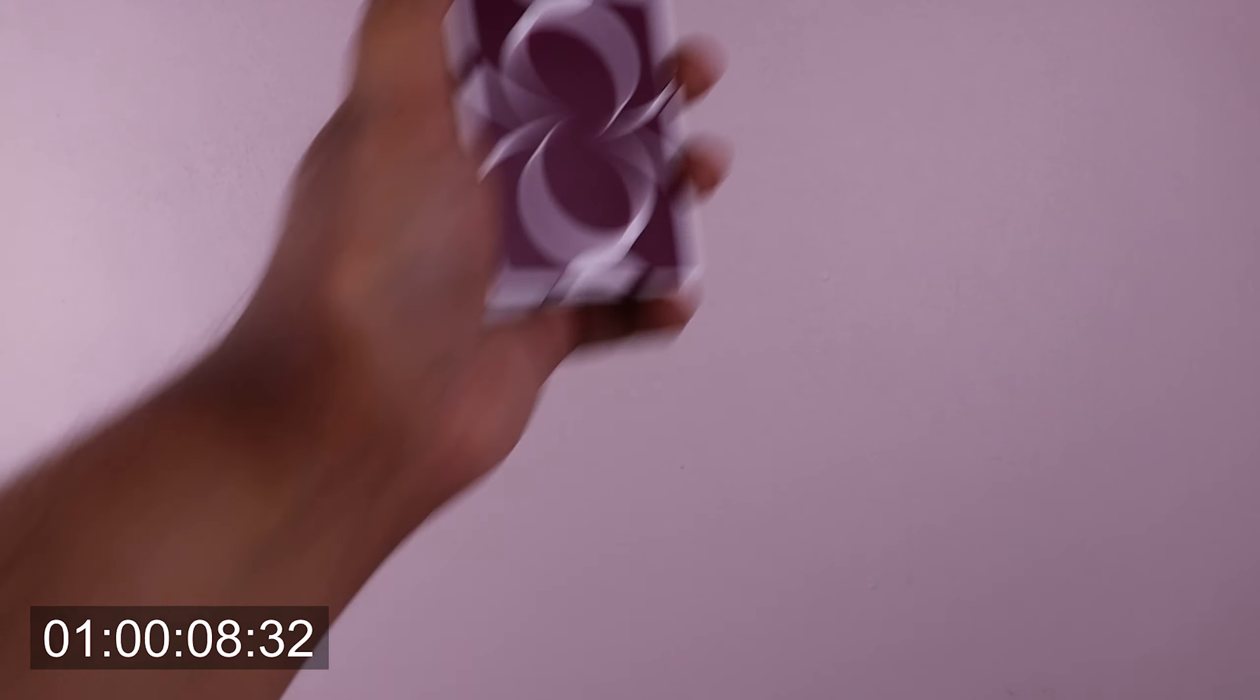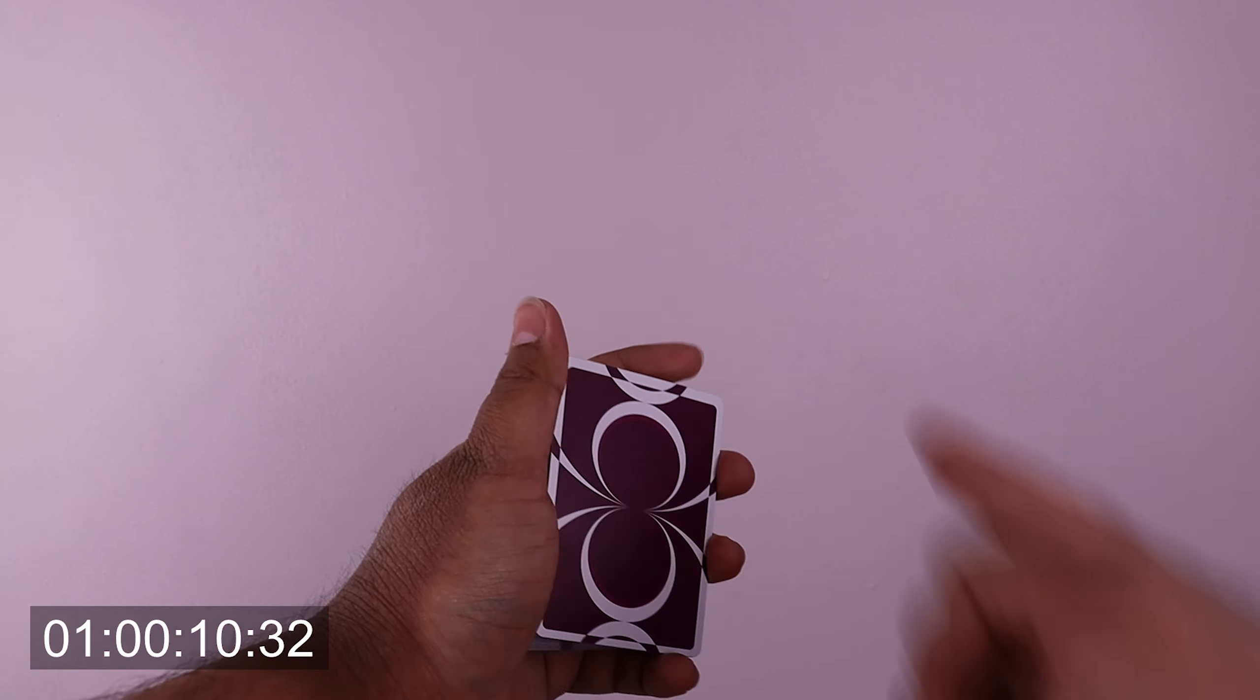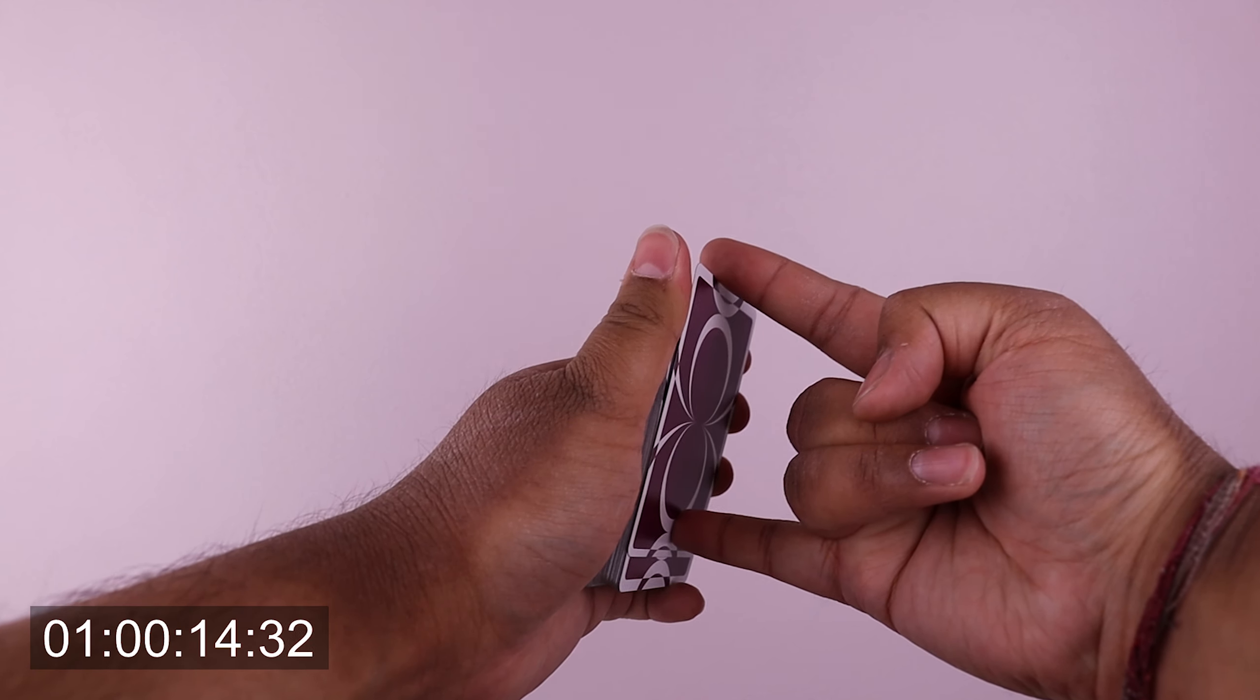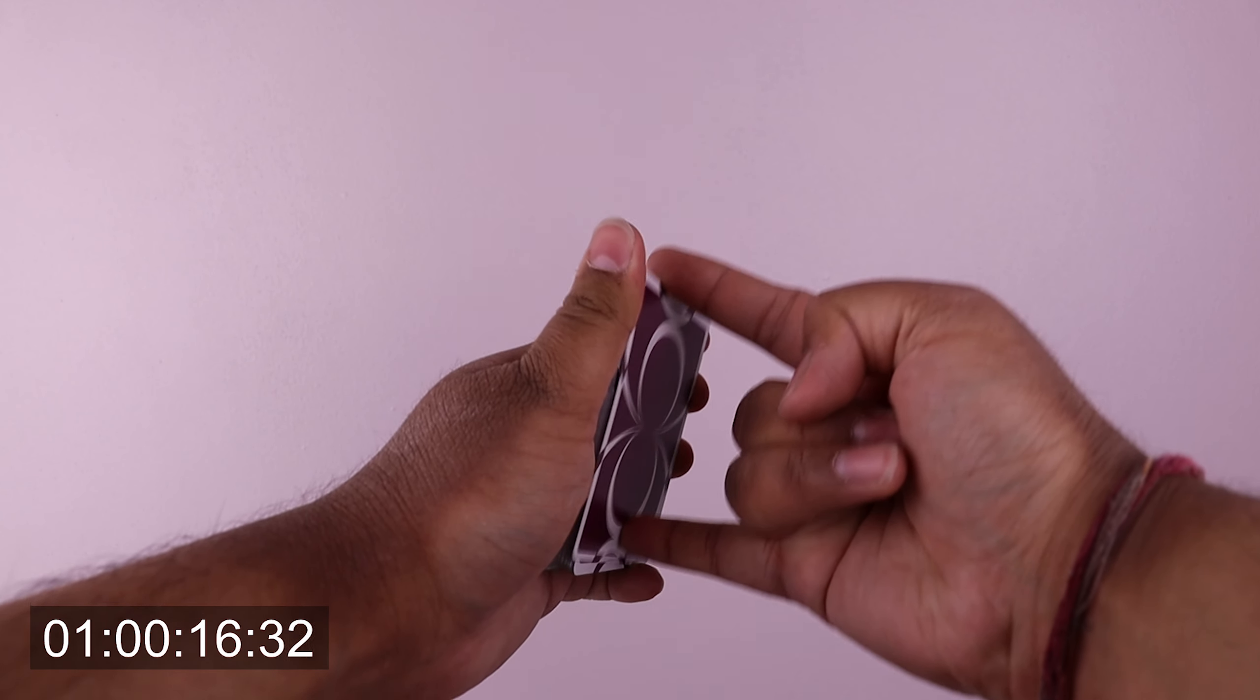For the first trick we're going to learn how to make a card float out of the deck. To make the card float all you need to do is grab the deck in your hand, stick your pinky out and your index finger and simply pull it up like so.